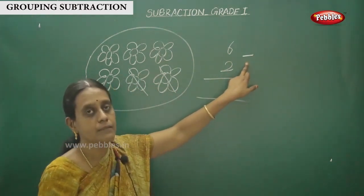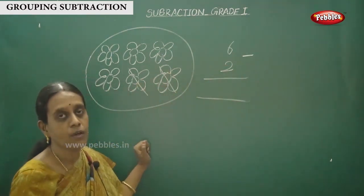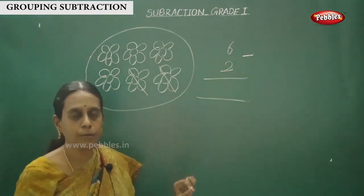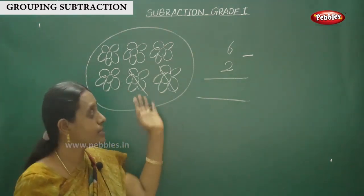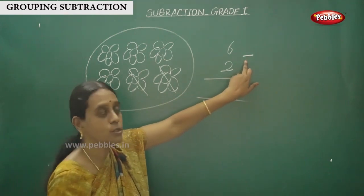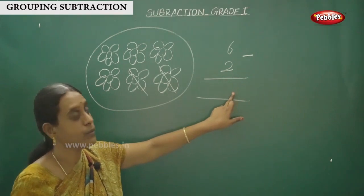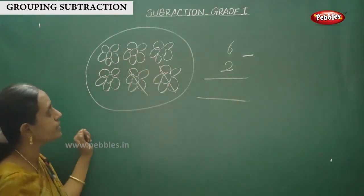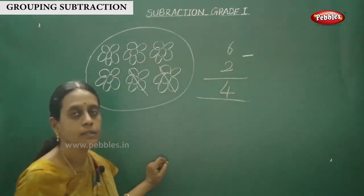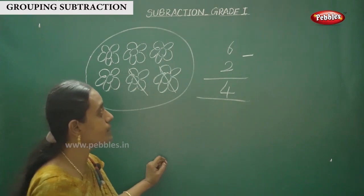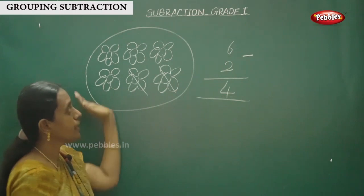We saw sign symbols — in maths, addition and subtraction signs. The sign is correct here: less, so 6 minus 2. How many flowers are there remaining? 1, 2, 3, 4. So the answer is 4. This is the way to subtract from one number to another using a diagram representation.